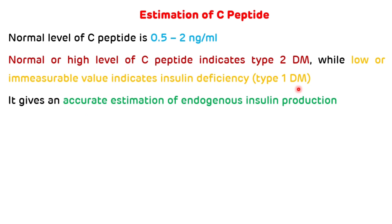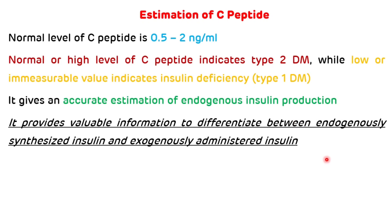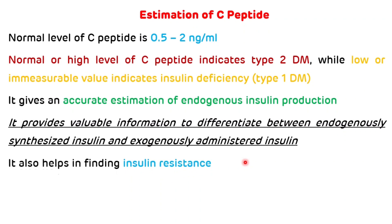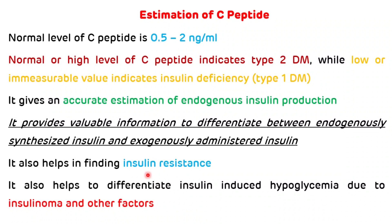It gives an accurate estimation of endogenous insulin production and provides valuable information to differentiate between endogenously synthesized insulin and exogenously administered insulin. It also helps in finding insulin resistance, and helps differentiate insulin-induced hypoglycemia from insulinoma — a cancer of beta cells of the pancreas that secretes insulin — where a gross increase in C-peptide indicates insulinoma.